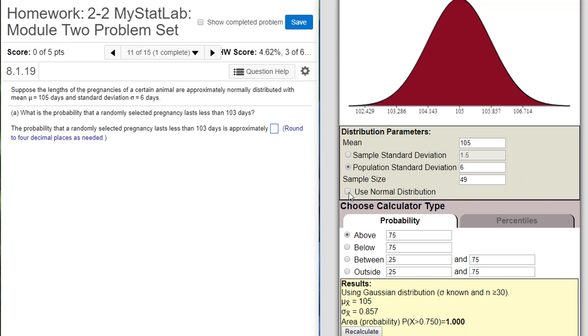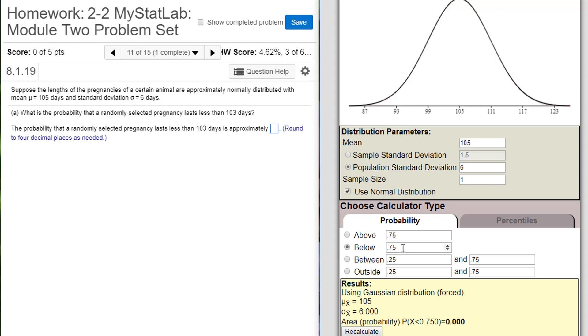I'm going to click this use normal distribution which is going to force the normal distribution on this. It's also going to allow me to do a sample of size one, which is the first thing I want to do. The probability that a randomly selected pregnancy lasts less than 103 days. Well, let's do a single one pregnancy and what's the probability that it's going to be below 103 days.